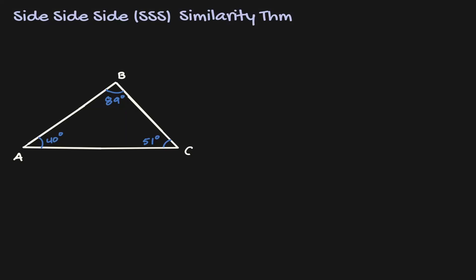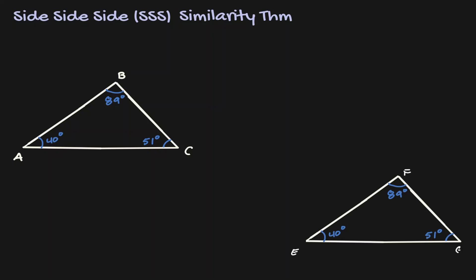Welcome. Let's discuss the idea of the SSS similarity theorem. Consider triangle ABC on the left with the given angle measurements. What would happen if we create a replica of this triangle? Let's call that triangle EFG. Thinking about this in terms of scale factors, we took triangle ABC and multiplied by a scale factor of 1 to obtain triangle EFG.